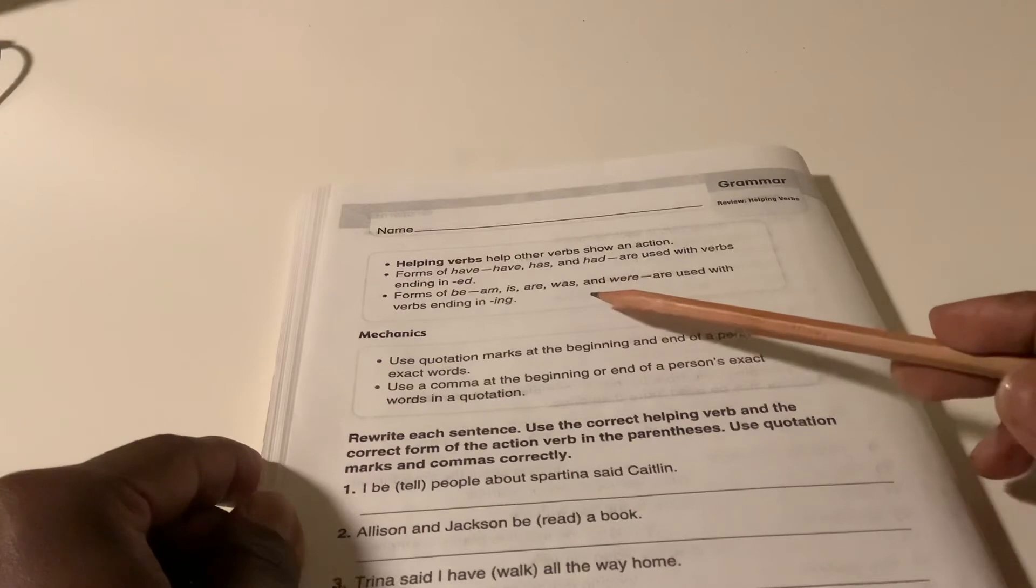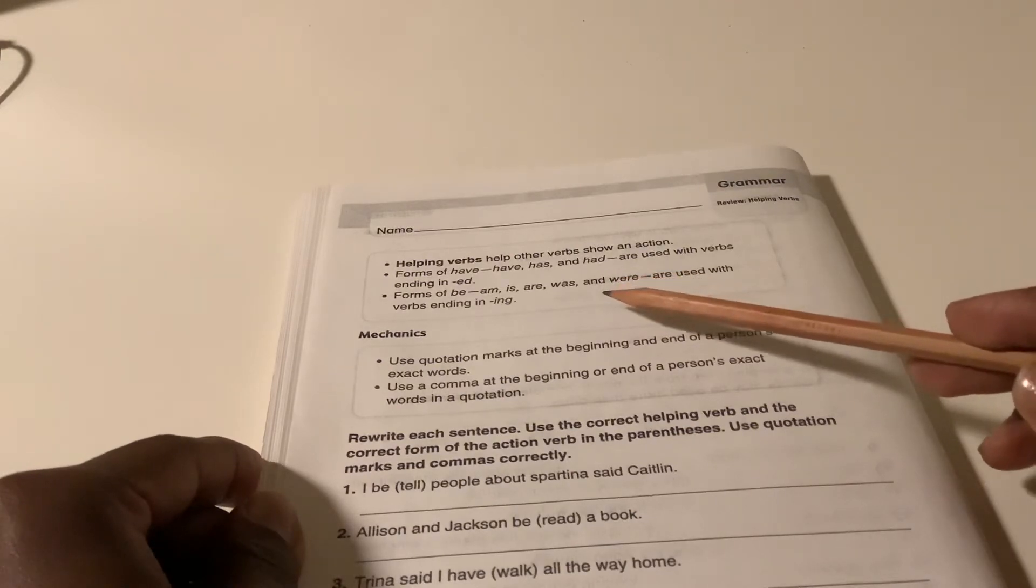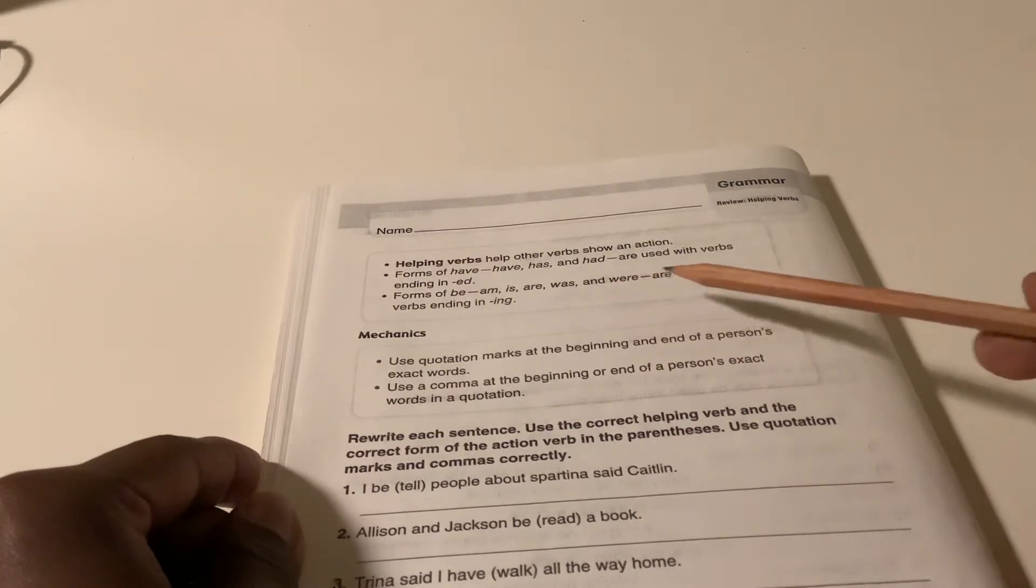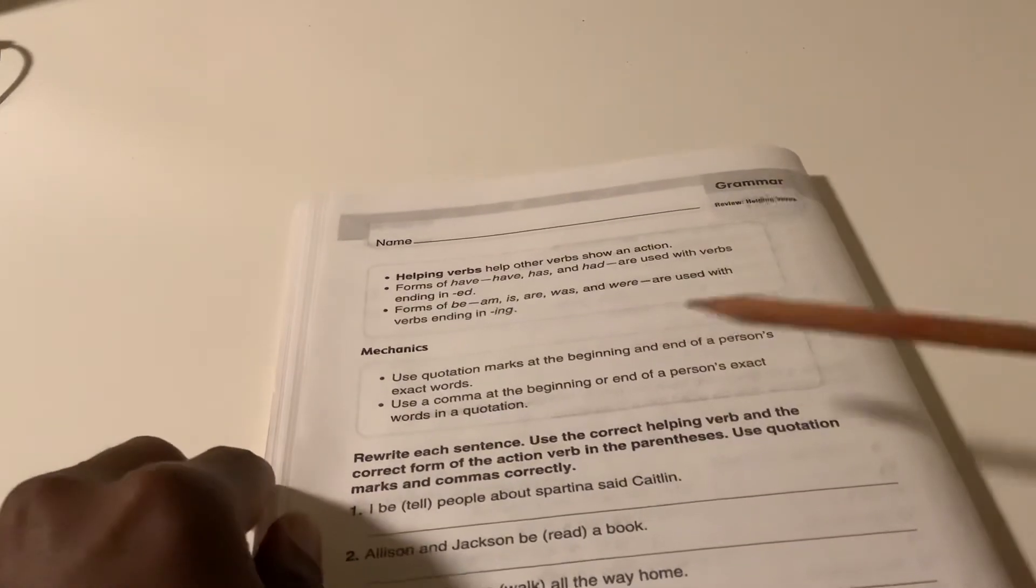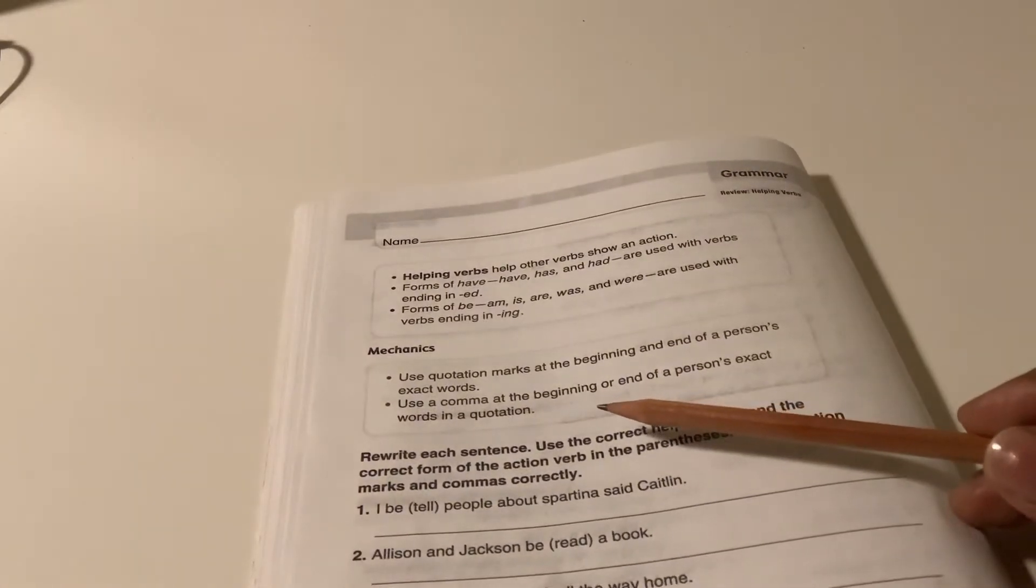Am, is, are, was, and were are used with verbs ending in ing.